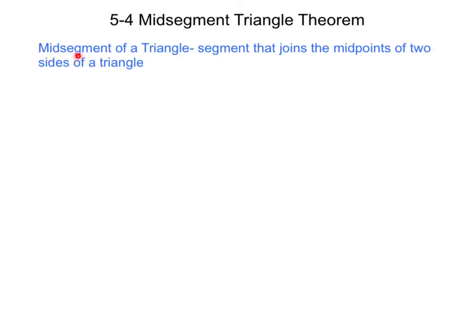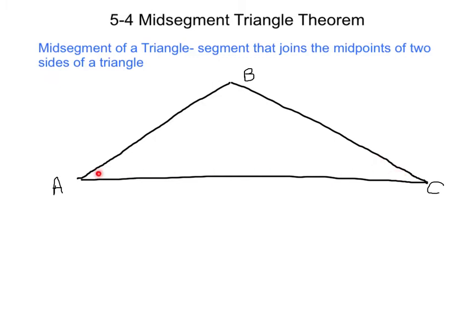The midsegment of a triangle is a segment that joins the midpoints of two sides of a triangle. Here we have a triangle ABC, and we're going to look for a midsegment of a triangle. Again, the midsegment joins the midpoints.